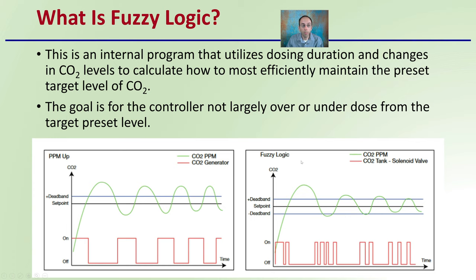When we implement fuzzy logic, we can see that the swings in the total duration spent over or below the set point start to get reduced over time. This is the controller learning the conditions, learning the growing area, learning the rate of dosing and getting more dialed in. The frequency tends to increase to little short durations — little pulses — which is a great way for the controller to learn your grow space and efficiently dose with carbon dioxide.